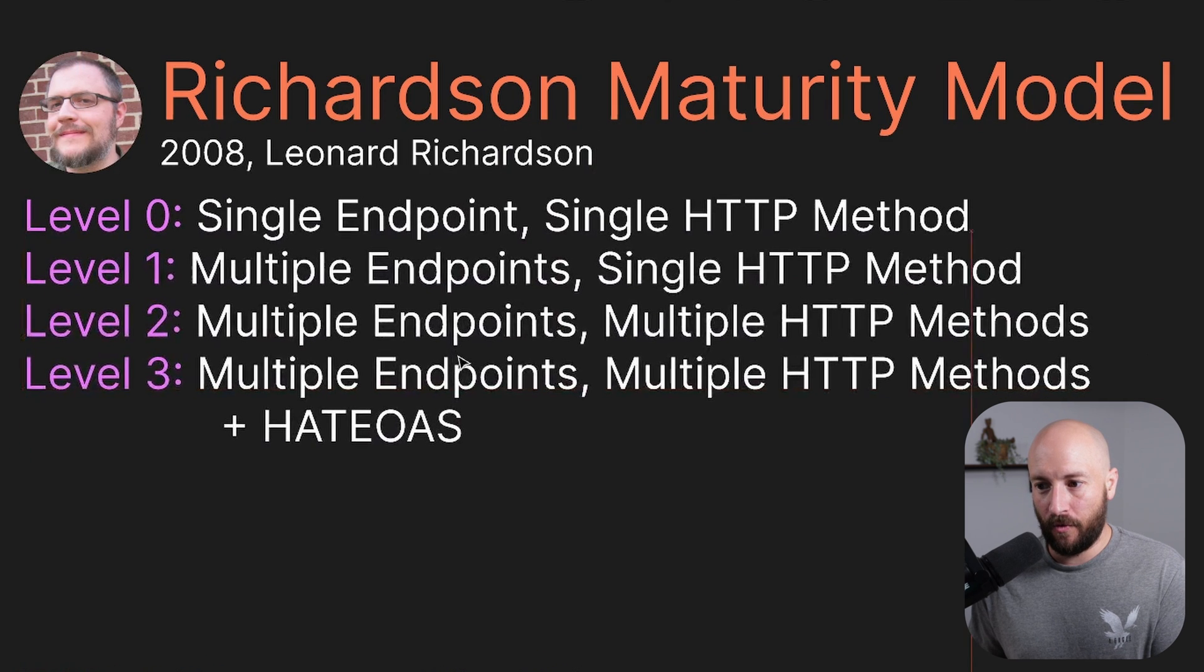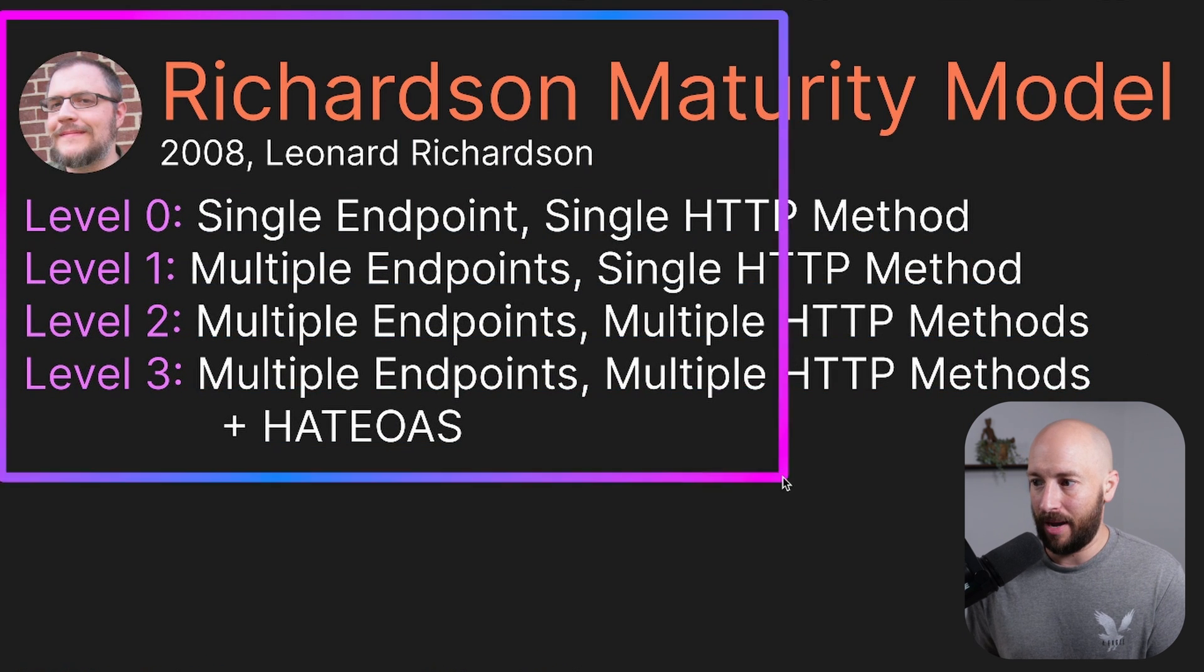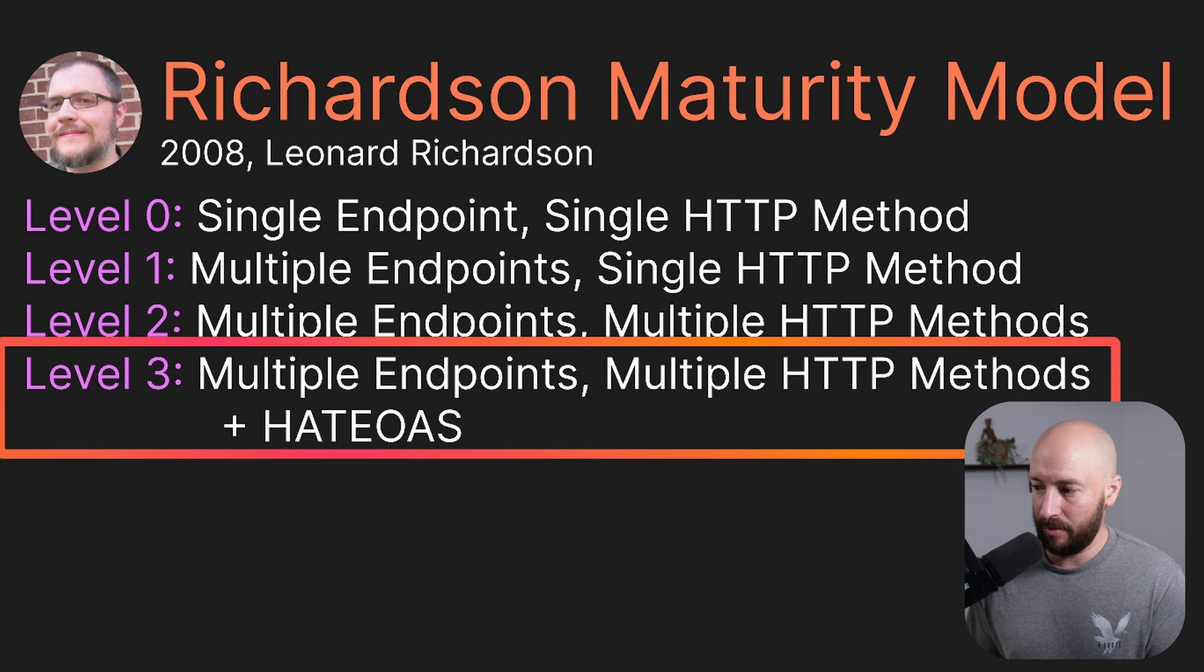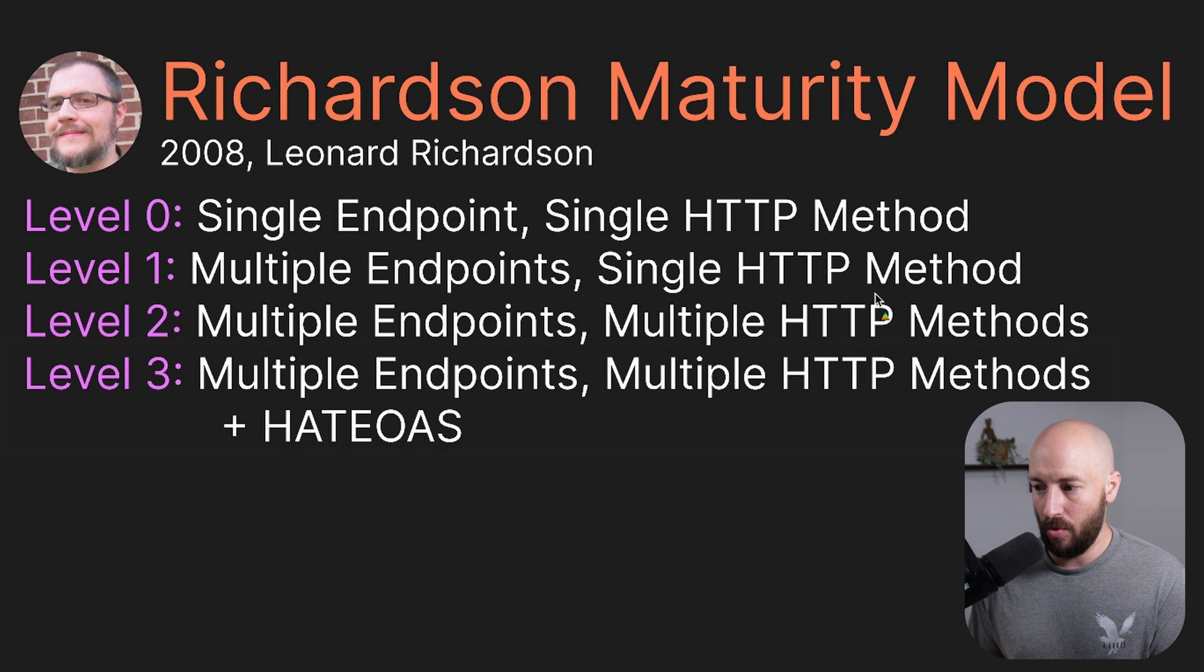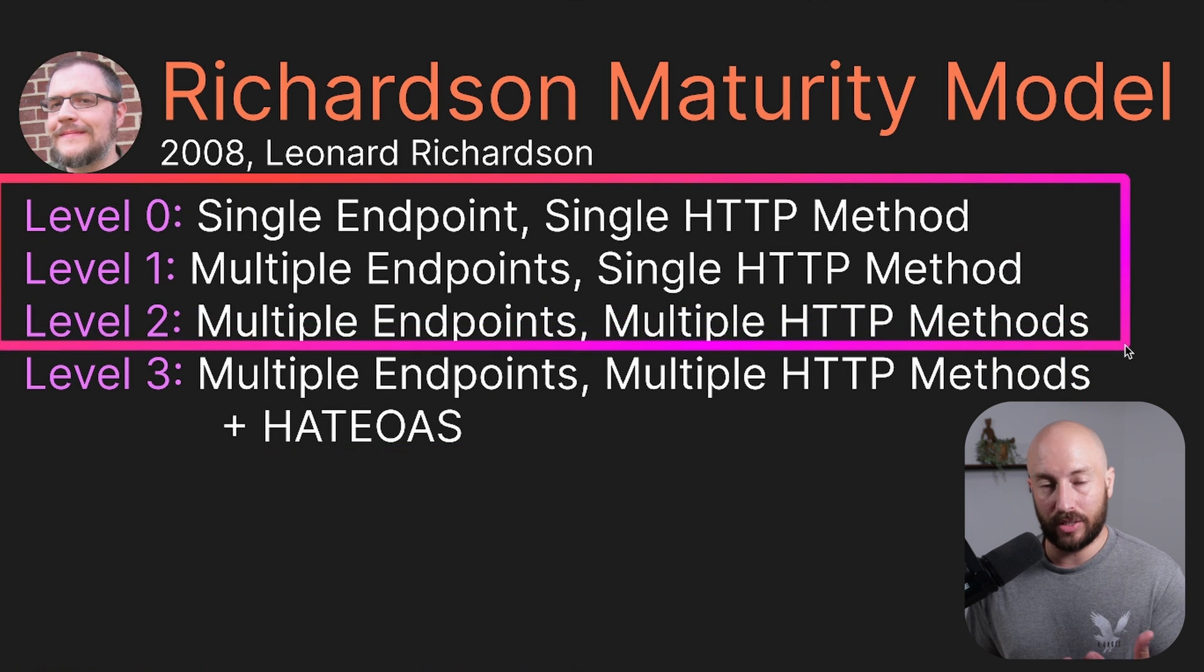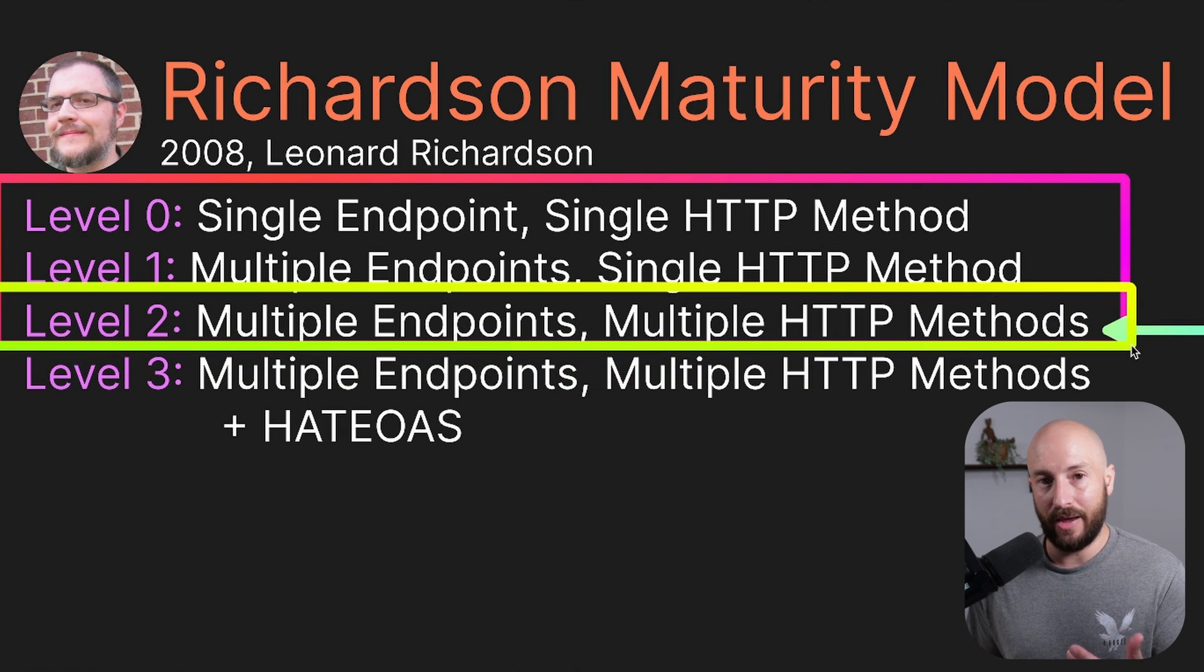Okay, so these are the four maturity levels laid out by Richardson. Now, in the industry today, level three is implemented by more or less no one. And if you're building or designing a REST API, for more or less 99% of the time, level two is what you want to aim for.